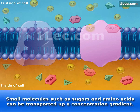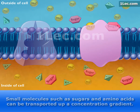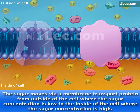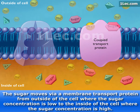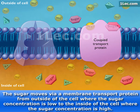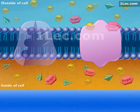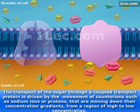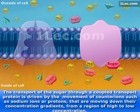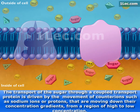Small molecules such as sugars and amino acids can be transported up a concentration gradient. The sugar moves via a membrane transport protein from outside of the cell, where the sugar concentration is low, to the inside of the cell, where the sugar concentration is high. The transport of the sugar through a coupled transport protein is driven by the movement of counter-ions such as sodium ions or protons that are moving down their concentration gradients from a region of high to low concentration.